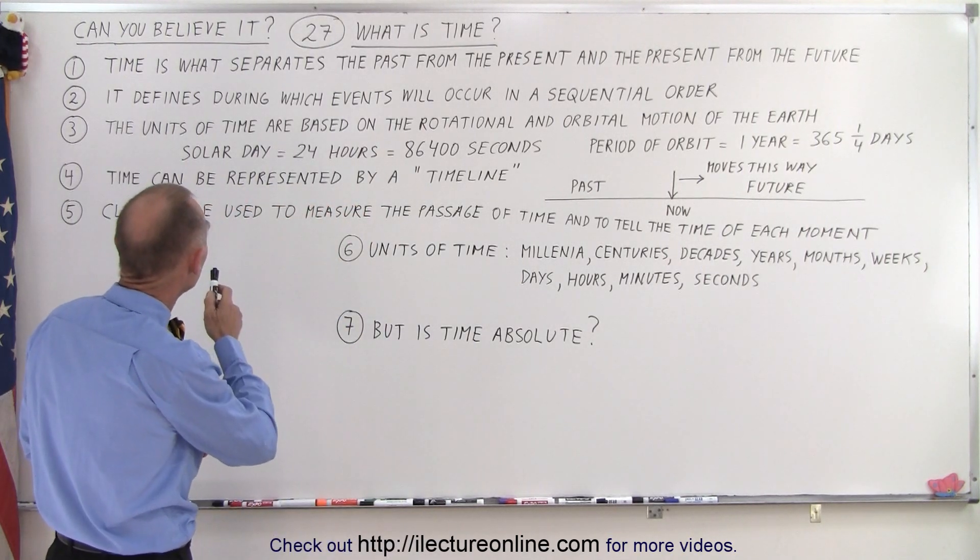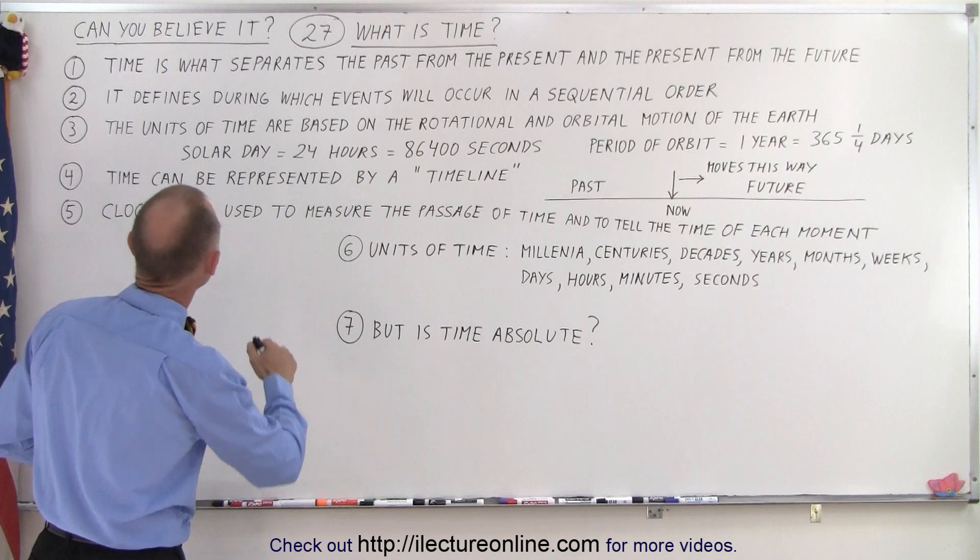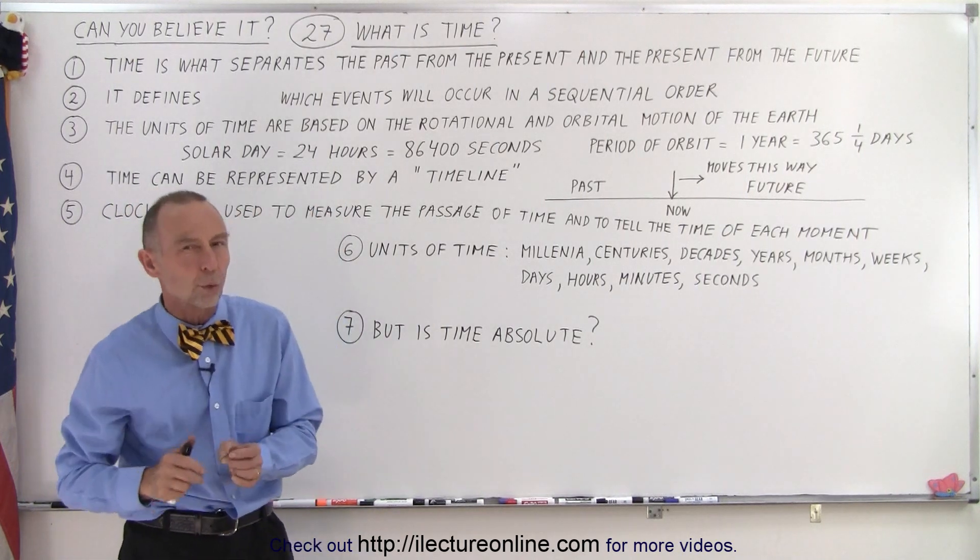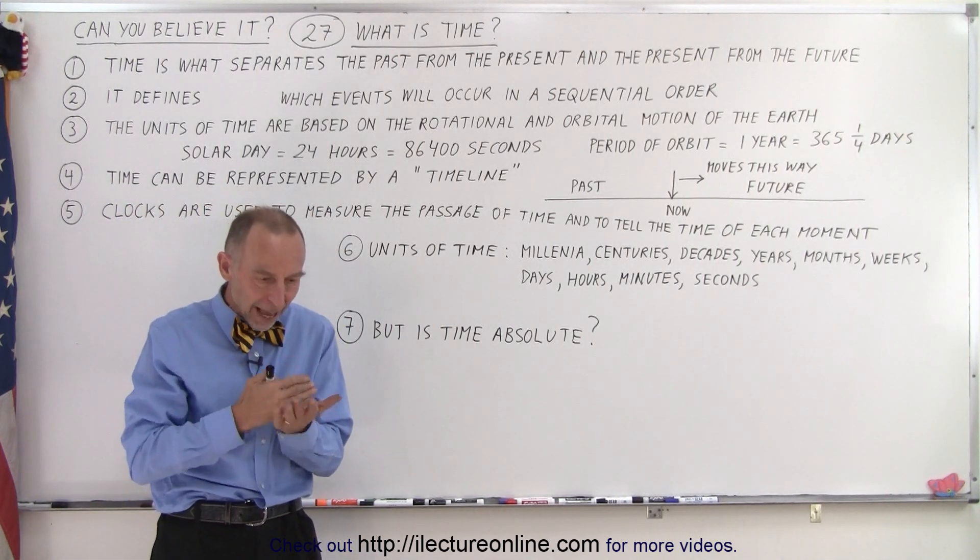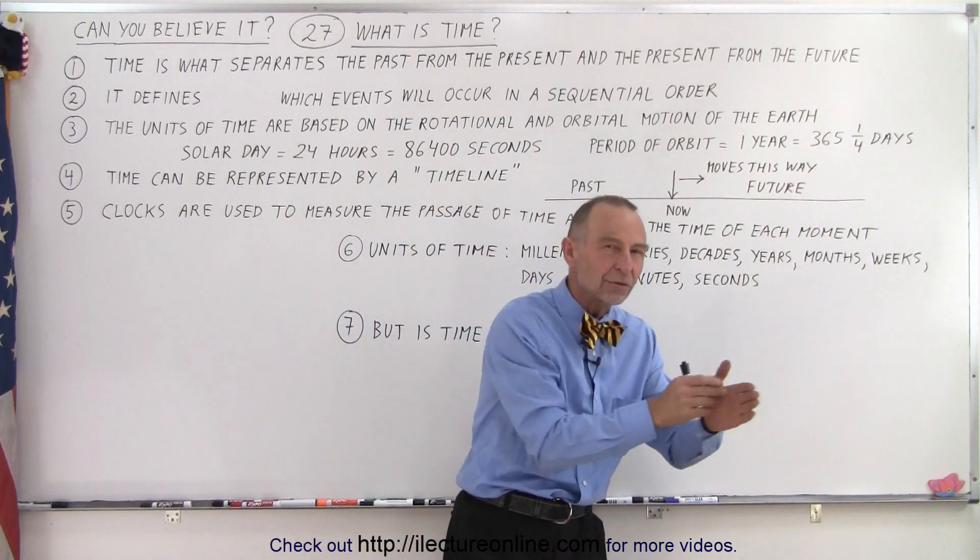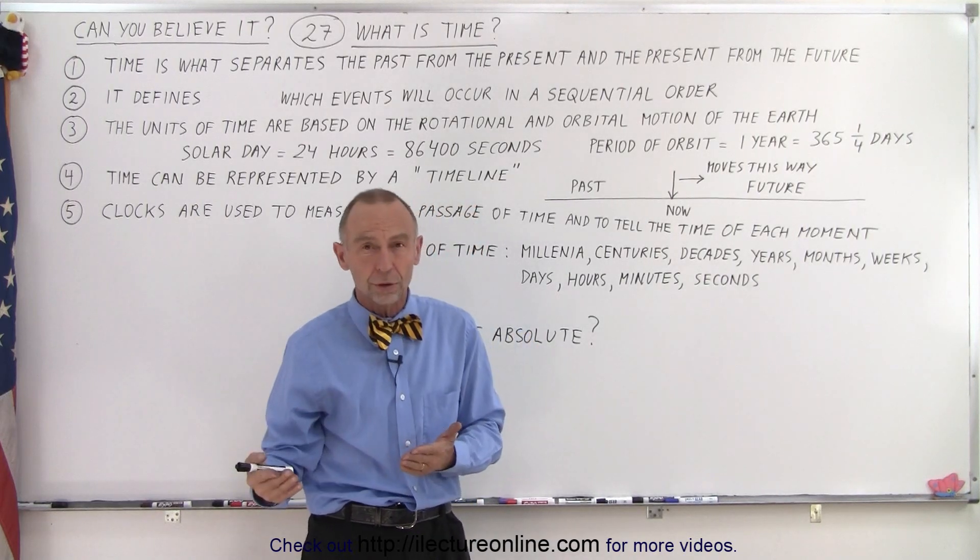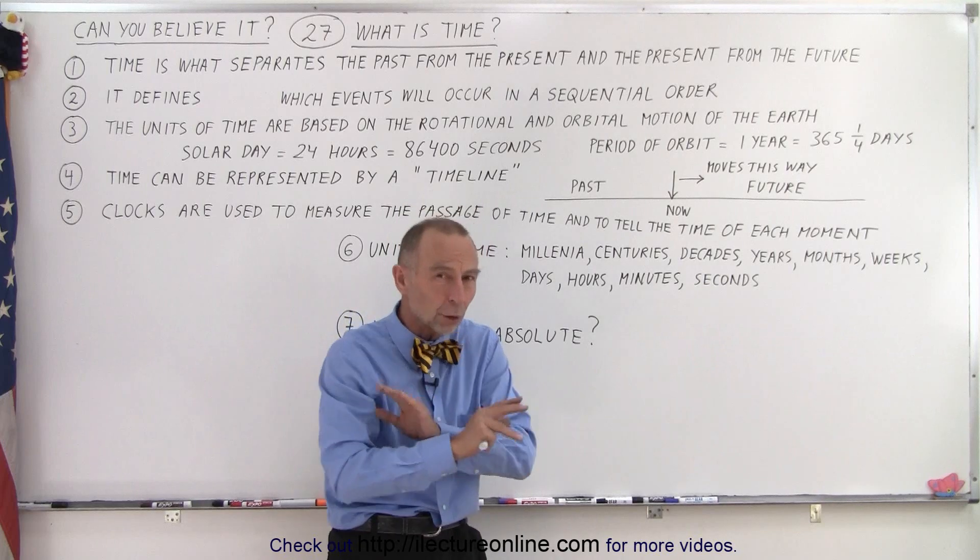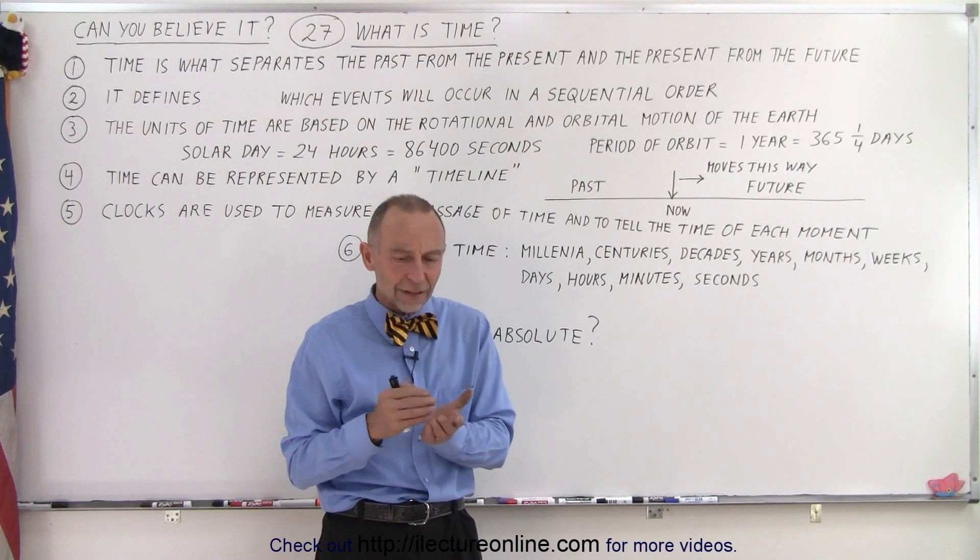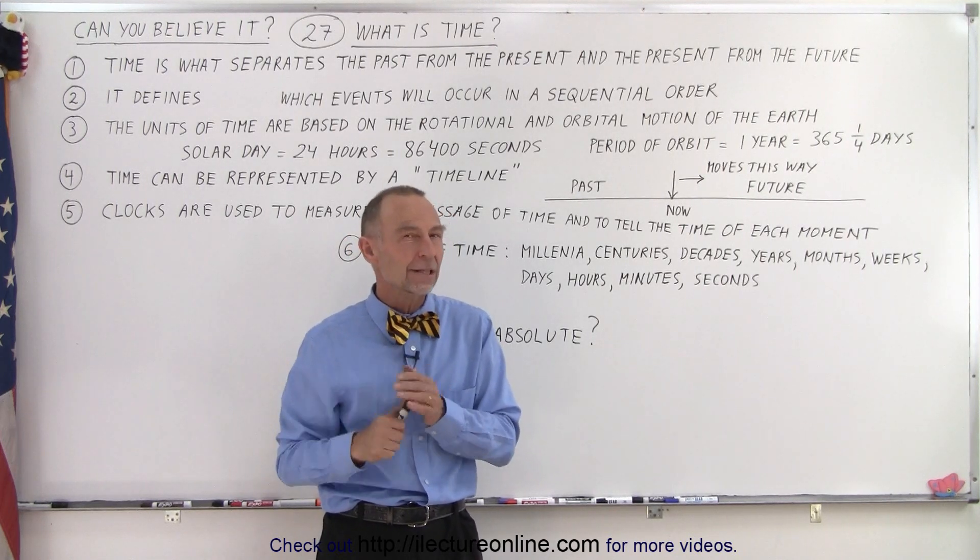But how else can we define time? It defines which events will occur in a sequential order. And that's the key. It seems like things happen in a sequence. Something happens now and then it happens and it happens and time moves forward. For example, when you play a soccer game, you're not going to score the fourth goal before you score the first goal. You'll score the first goal, then the second, then the third, then the fourth. And it will always happen that way, never the other way around. There's no exception to that.